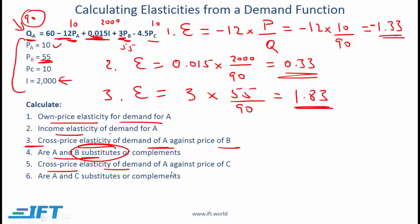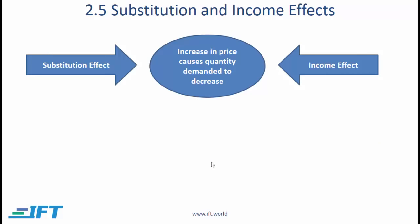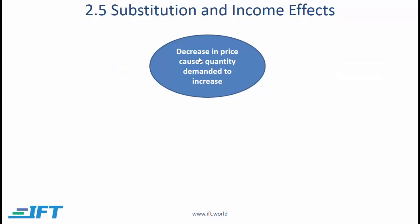For the cross price elasticity of demand for A against the price of C, we take the coefficient minus 4.5 multiplied by the price of C (10) divided by quantity (90). This gives a negative number, which implies that A and C are complements.